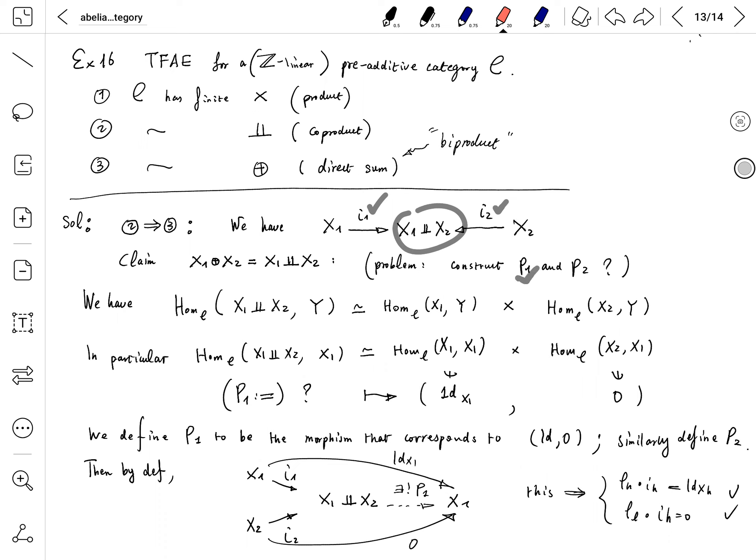We still need to construct our two projections P1 and P2 such that the conditions are satisfied. So how do we construct P1 and P2? We use the fact that the hom-set is a Z-module, and the universal property of coproduct. You could even use this to define what is coproduct.